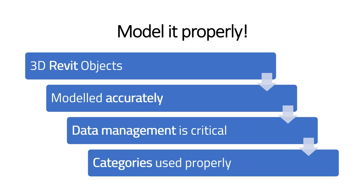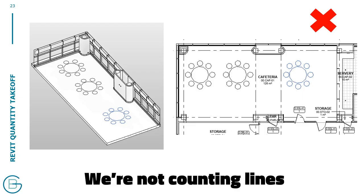There are four principles I follow, which I'll summarize in four slides. First, we have to model things properly. We're in a 3D BIM modeling platform, but I still see a half-in, half-out approach when it comes to committing to a BIM model. It's not always as literal as using model lines to represent a table — sometimes it's people dumping a family from online without checking any of the data or parameters, and then wondering why it doesn't schedule properly.